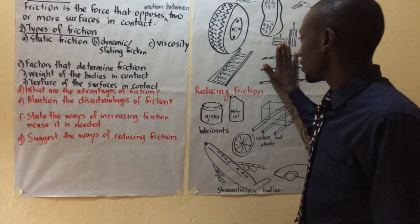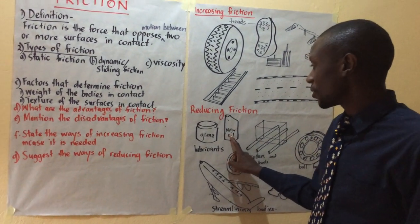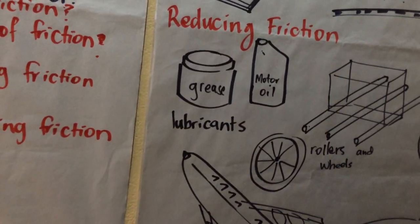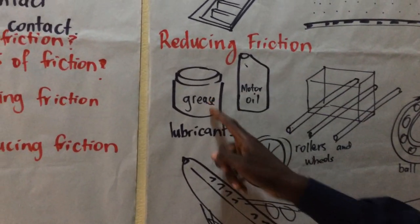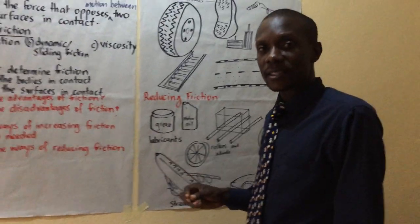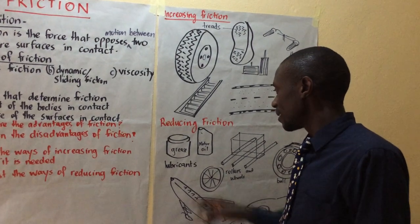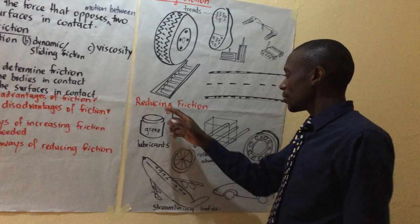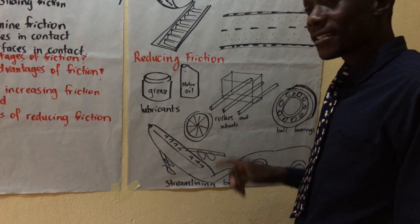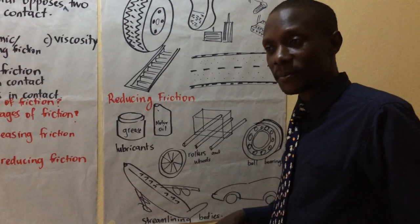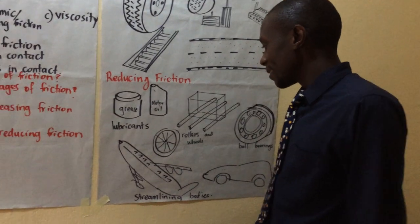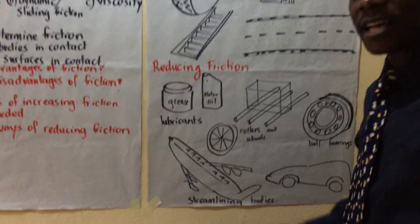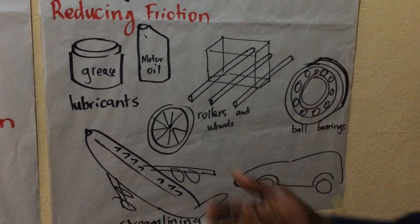Ways of reducing friction: by use of lubricants. We have two common lubricants — grease and motor oil. Lubricants are liquid materials used to reduce friction; they are fluids used to reduce friction in the moving parts of machines. Another way is by use of rollers and wheels. Rollers are on your bags — we see people dragging bags with rollers. A huge box can be placed on rollers and pushed. Wheels on cars, bicycles, and motorcycles also help reduce friction.